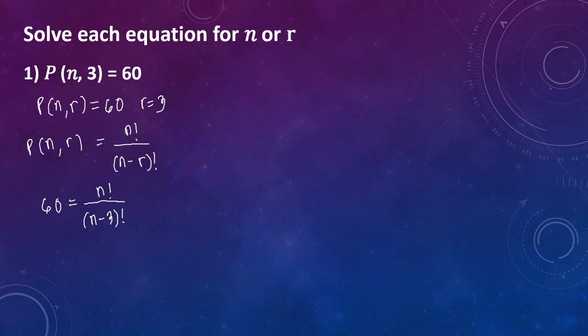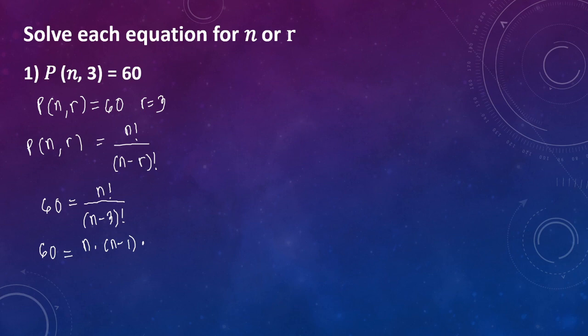I-rewrite natin yung n factorial with a factor quantity of n minus 3 factorial. So magiging ganito yun: 60 equals n times quantity of n minus 1 times quantity of n minus 2 times quantity of n minus 3 factorial.